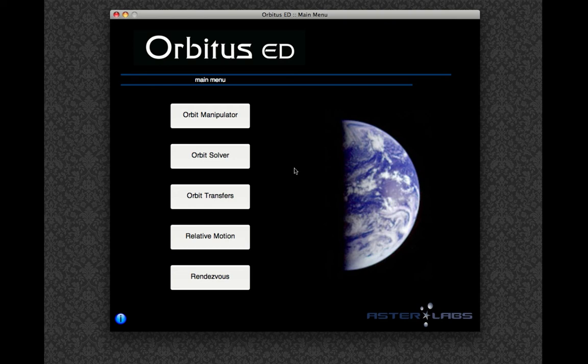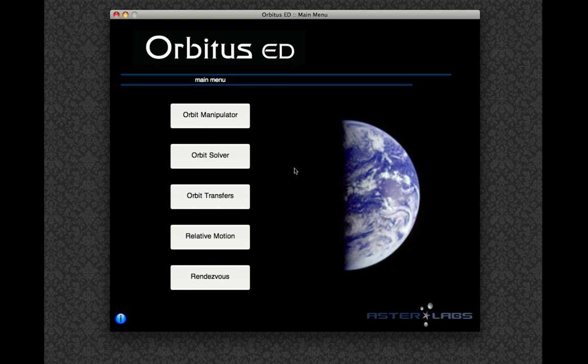I'm going to show you how easy it is to use the Orbit Manipulator module to control a satellite's orbit and ground track in real time. From the Orbitus main menu, click on the Orbit Manipulator button.